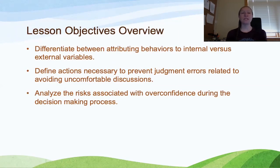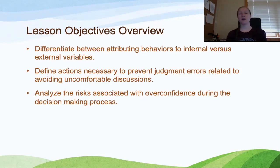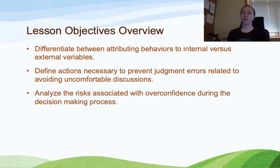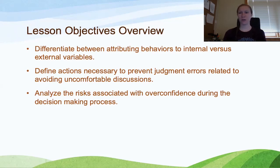Today, what we're going to focus on in regard to the cognitive biases we're talking about — misattribution, misperception, and overconfidence — the objectives for today are to differentiate between attributing behaviors to internal versus external variables, defining actions necessary to prevent judgment errors by avoiding uncomfortable discussions, and analyzing risks associated with overconfidence during the decision-making process.